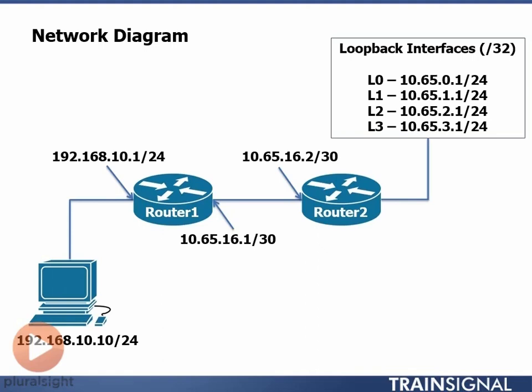Now let's talk about how we would configure Router 1 with static routes in order to reach each of those four loopback addresses on Router 2.